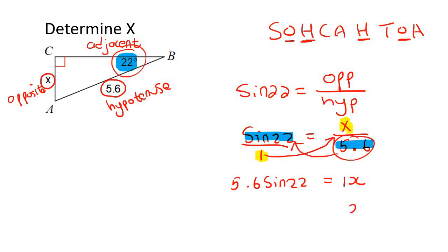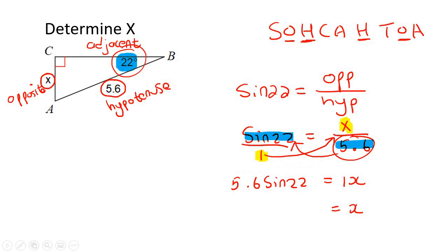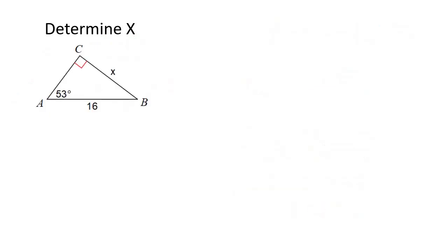So you end up with x is equal to — just type this all on the calculator — and if you round off, that's going to be 2.10. Let's do some more examples now.